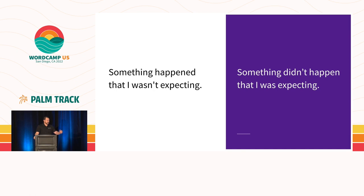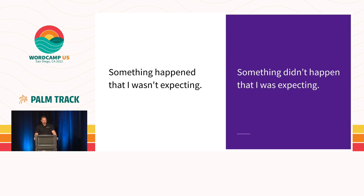Any time you have a problem, there are two sides of the coin: something happened that you weren't expecting to happen, or something didn't happen that you were expecting to happen. We're going to take a look at what all these different situations could be and give you some structure around how you can actually go about the debugging process.